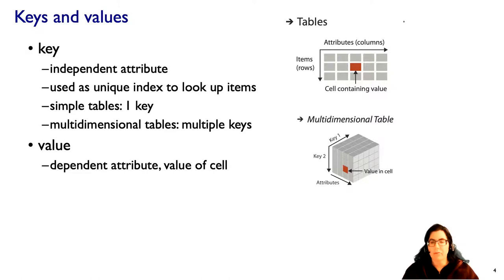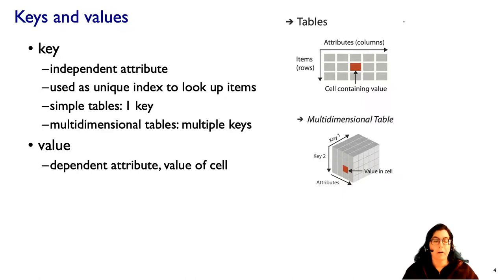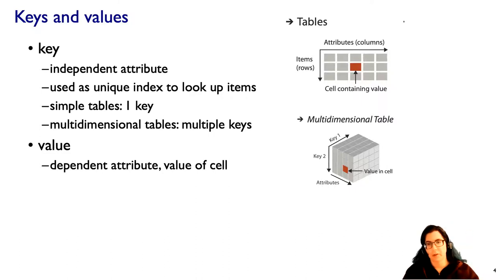With simple flat tables, there's only one key to worry about, and sometimes that key is even implicit rather than explicit. If you had a multi-dimensional table, you would need multiple keys to look up a single cell. The columns of a simple flat table are the attributes, and the rows are the items.